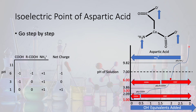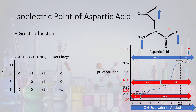Let's check out aspartic acid's structure at a pH of 11. At pH 11, we are far to the right of both the amine and both carboxylic acids. All acidic protons are donated to the surrounding solution. The main carboxylic acid is negative, the R group carboxylic acid is negative, and the amine has a net charge of 0 because it has donated the available hydrogen. So in our table: −1, −1, 0, for a net charge of −2.